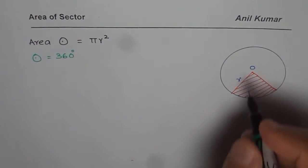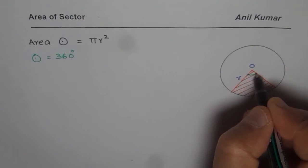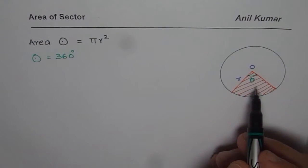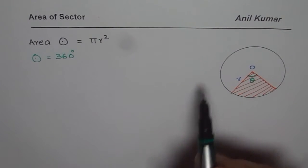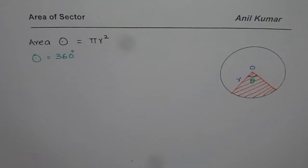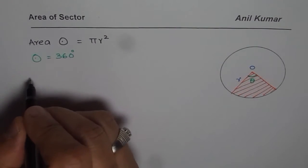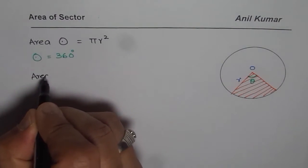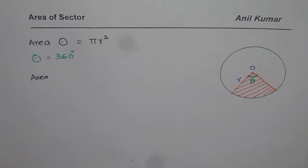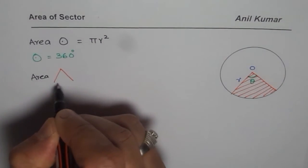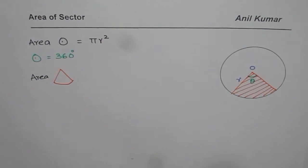Now let's assume that this angle here is θ degrees. From the rotational symmetry of the circle itself, what should be the area of this particular sector? It is in the ratio. So we can say the area of the sector, let me draw it in the shape, should be equal to how much?